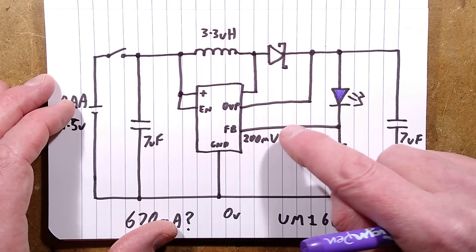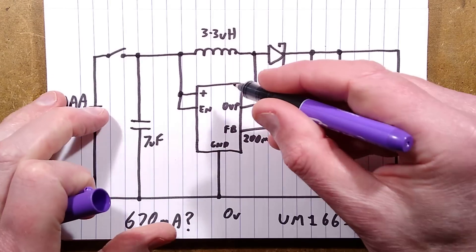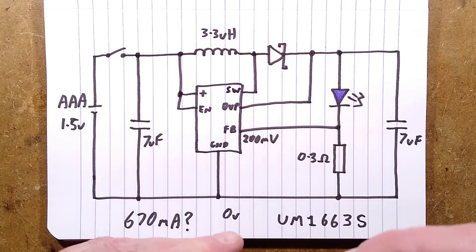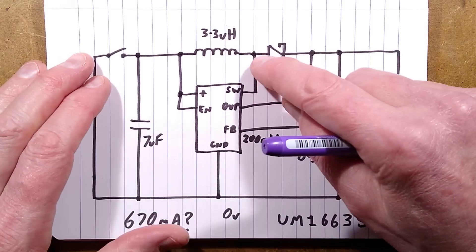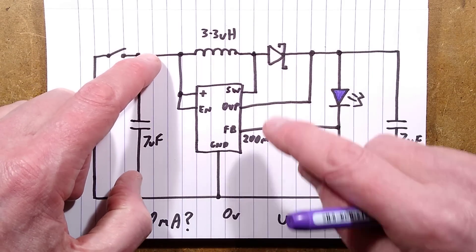There is a 3.3 microhenry inductor that is switched to the negative via the pin, which may be called switch or inductor or whatever. And what happens is it pulls this end of the inductor down to the 0 volt rail. And in doing so, this end goes negative, that end's positive, builds up the magnetic field, then it turns it off.